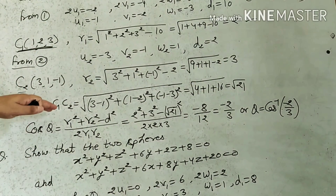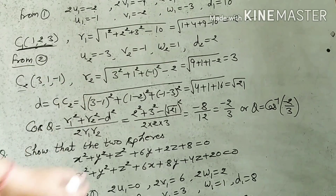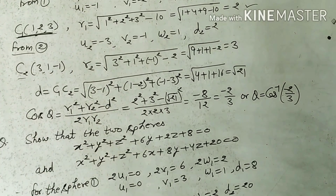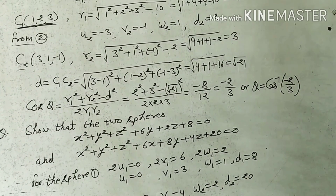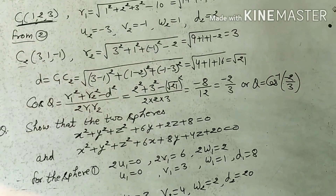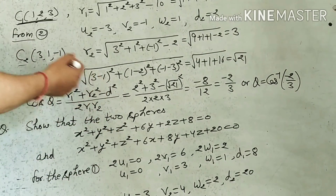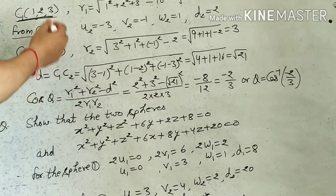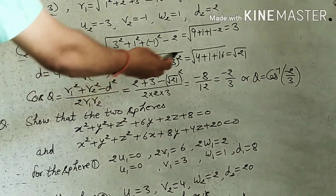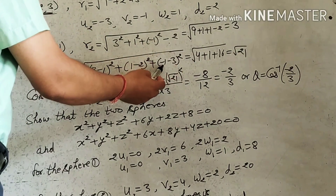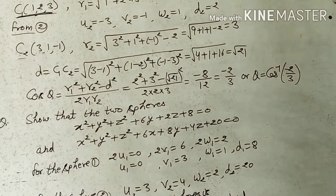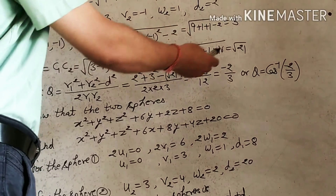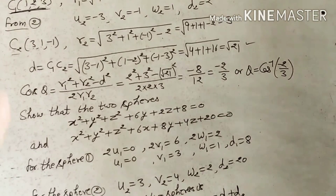Now find the distance D between the centers of the two spheres, C1 = (1,2,3) and C2 = (3,1,−1). Using the distance formula: D = √[(3−1)² + (1−2)² + (−1−3)²] = √[4 + 1 + 16] = √21.